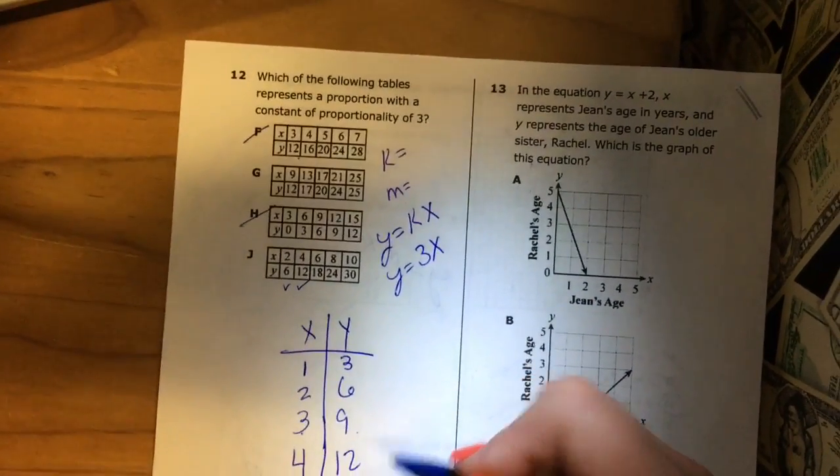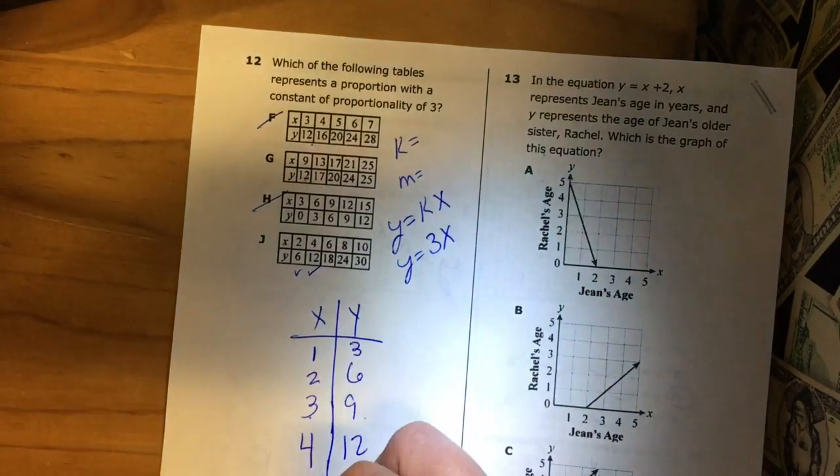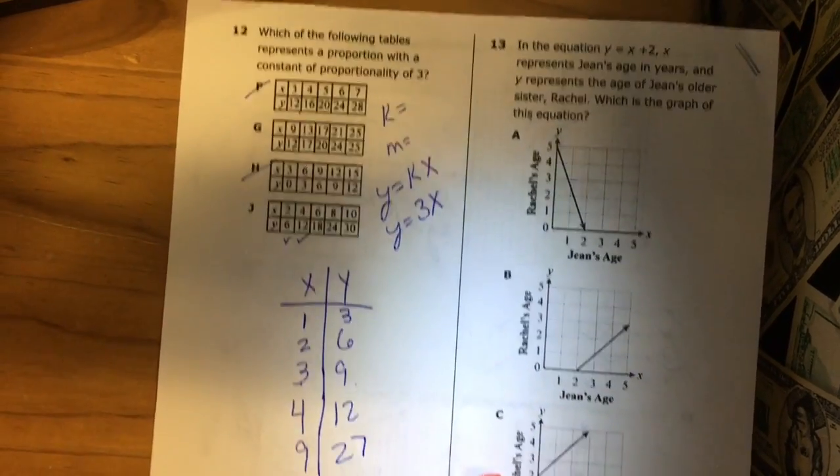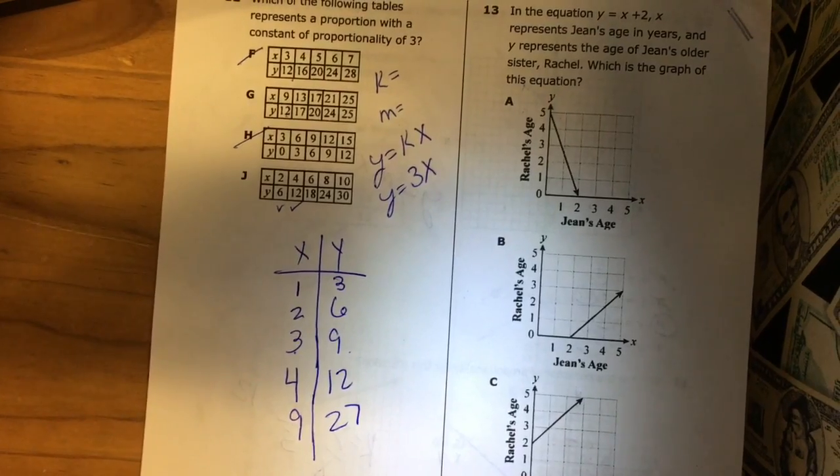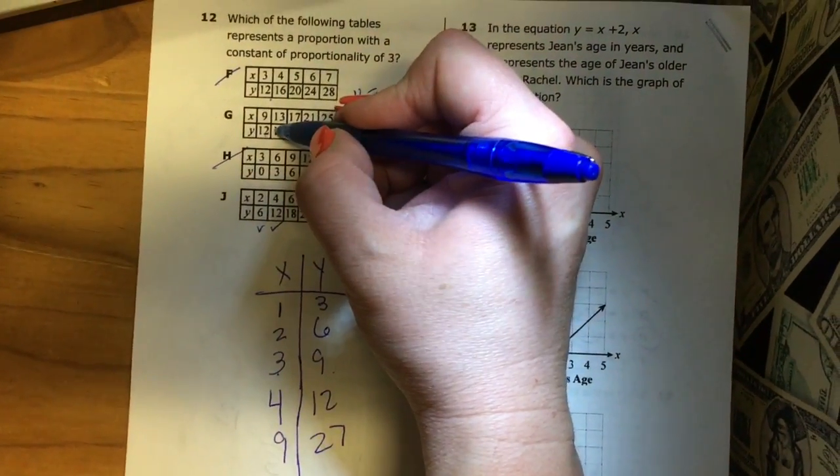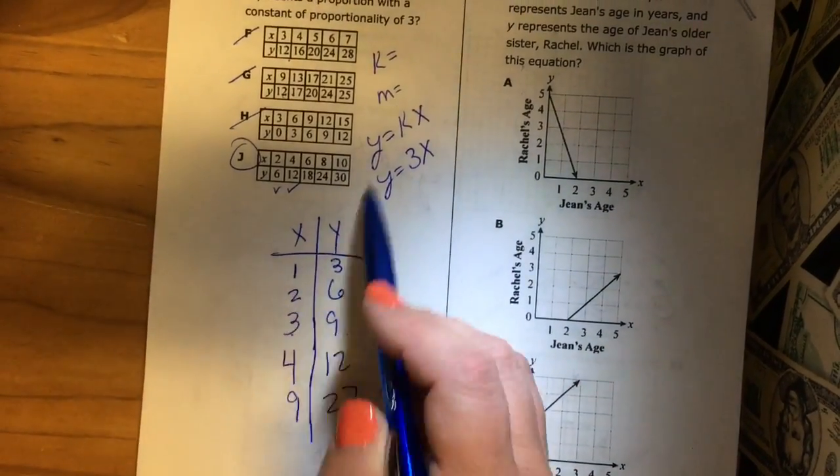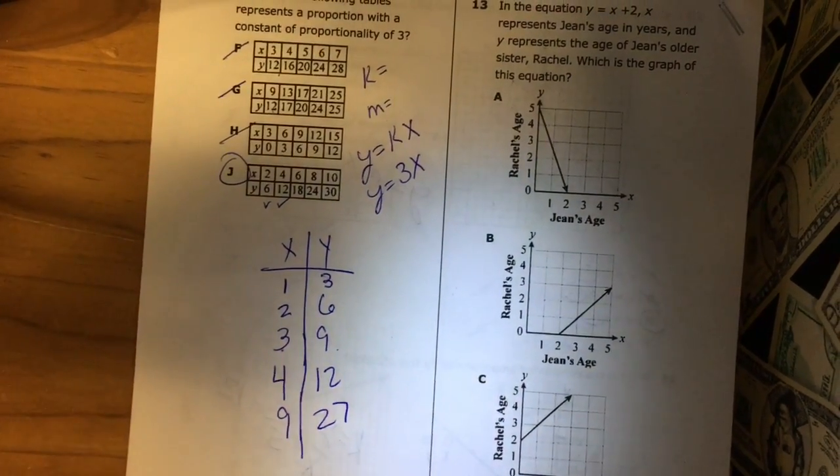So we have 9 here, so if I had 9 times 3 that would be 27. 9 times 3 is 27, which is not 12, so it wouldn't be G. It's gonna be J. Okay, put a box around answer choice J.